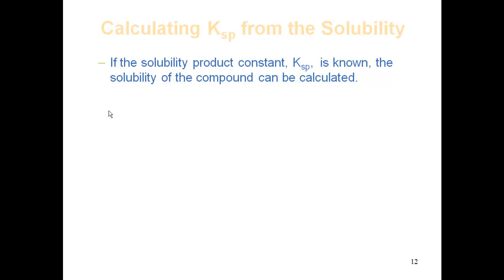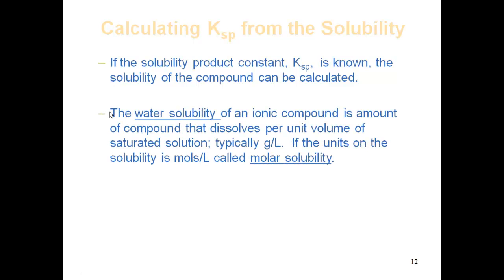Now, if the solubility product constant Ksp is known, then we can determine the solubility of a compound — kind of like how we used Ka and Kc to do calculations. The water solubility of an ionic compound is the amount of compound that dissolves per unit volume of saturated solution, and we typically use units of grams per liter. If we're using moles per liter, we refer to that as molar solubility. Most of the time we calculate molar solubility from our Ksp expression, but sometimes you want solubility in grams per liter — which is what we'll do in the next example.